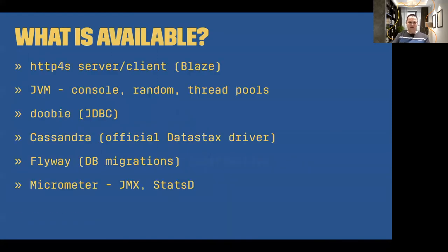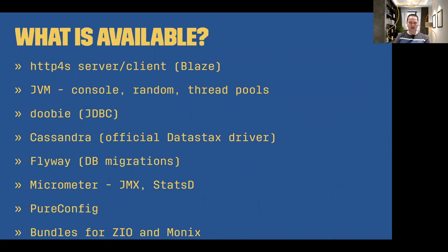Here's a list of subprojects available in SST right now: there's support for HTTP4S server and client on top of the Blaze implementation, support for JVM utilities like console, random, and thread pools. We support Doobie for relational database access, Flyway for database migrations, Micrometer for monitoring, PureConfig for typesafe configuration, and we have so-called bundles — bundles of multiple dependencies together for ZIO and Monix.